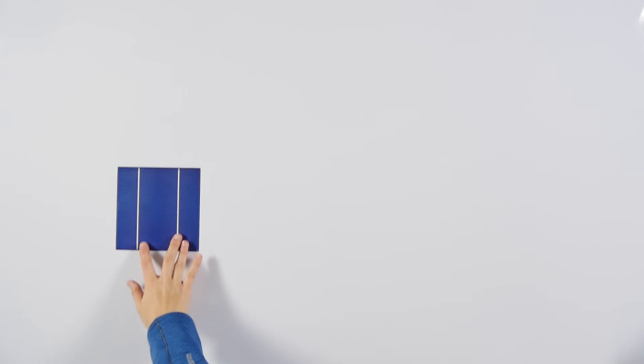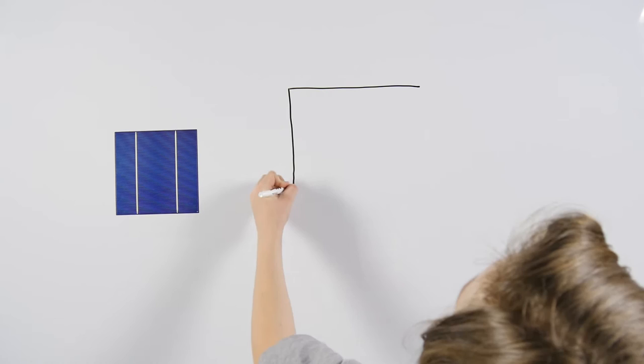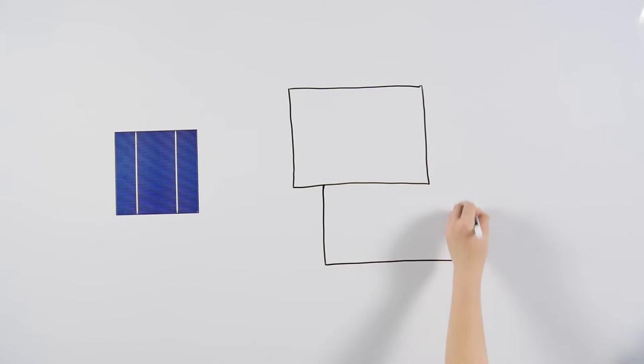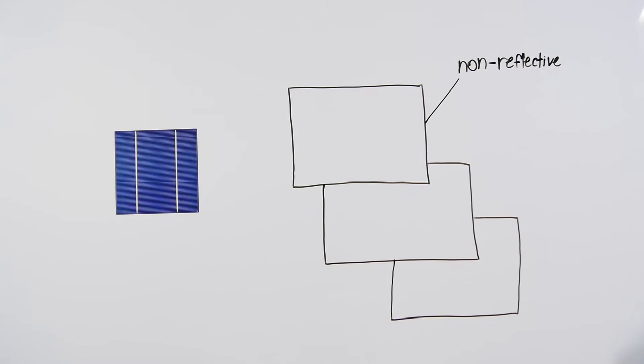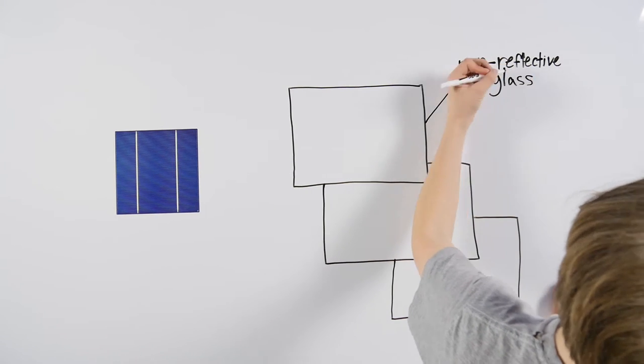To better understand how PV works, we have to break down the panel into its separate parts. Solar panels have three main parts. The top is a layer of non-reflective glass, which not only protects the panel, but also prevents the light that is reflected off of the PV cell from escaping.